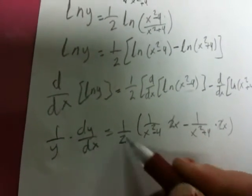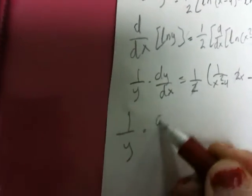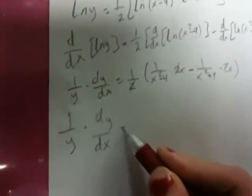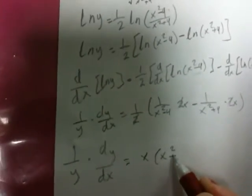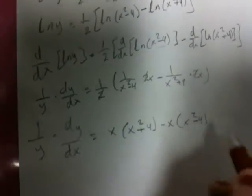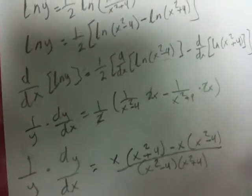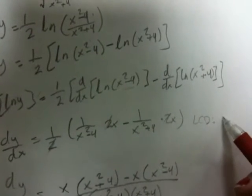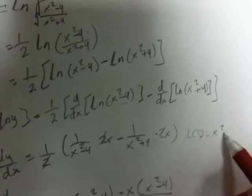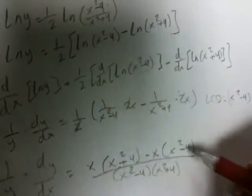We cancel the twos with the one-half. Then we have 1 over y times dy/dx equal x over (x squared minus 4) minus x over (x squared plus 4). We take the LCD of the denominators, which is (x squared minus 4) times (x squared plus 4), multiply through, and cancel accordingly.